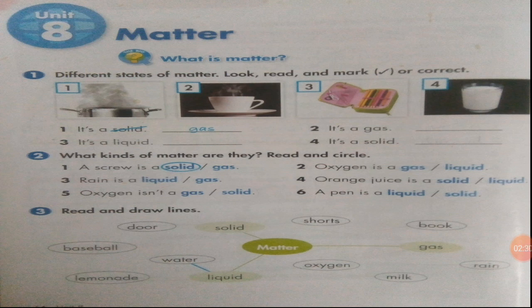Second one: oxygen is a gas or liquid — circle the correct answer. Third one: rain is a liquid or gas. Fourth one: orange juice is a solid or liquid. Fifth one: note that it says 'is not' — keep that in mind. Sixth one: a pen is a liquid or solid — circle the correct answer.